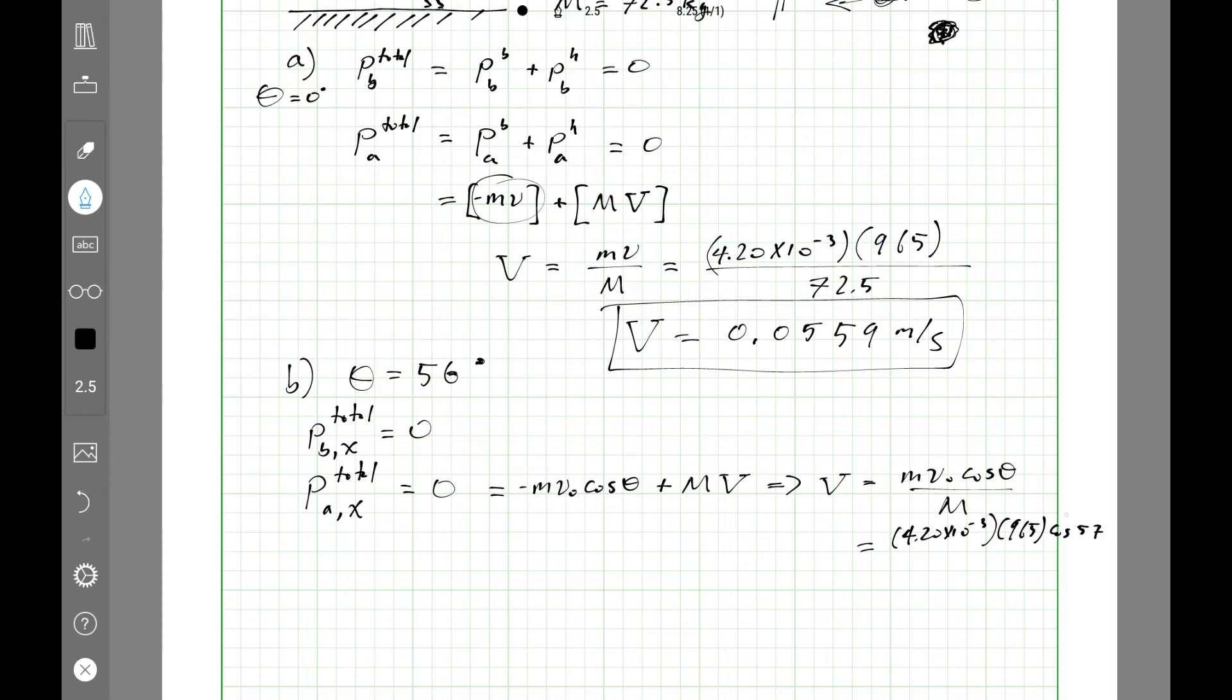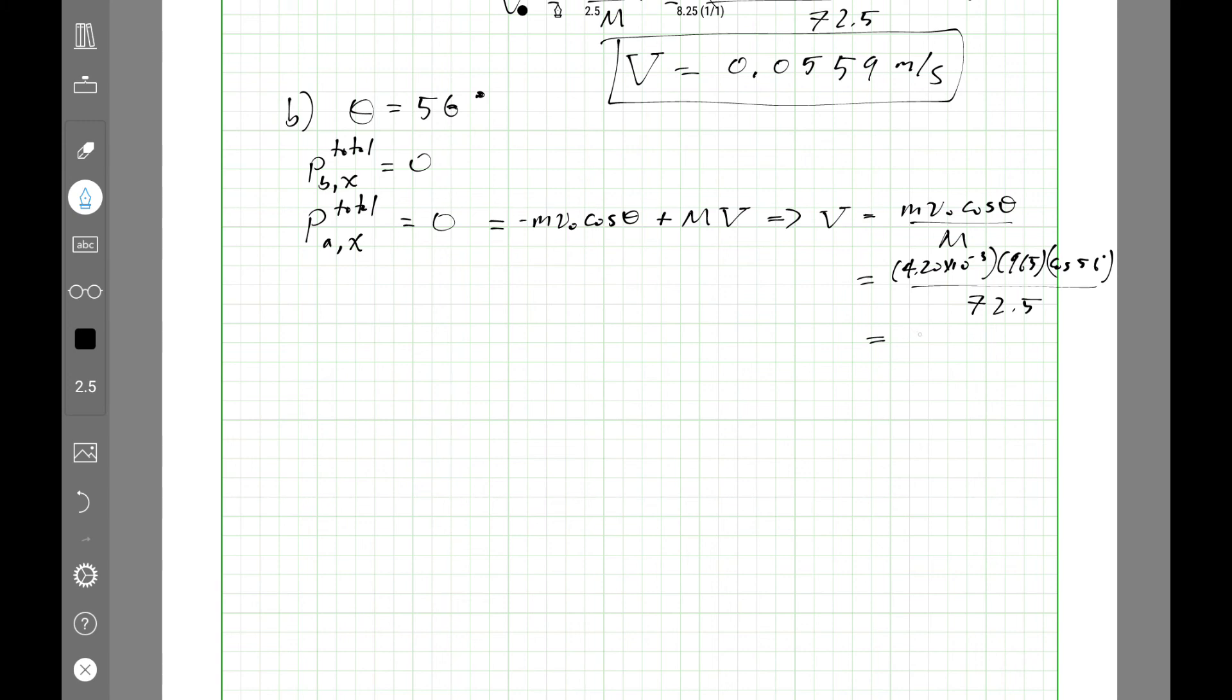56, 965 times 4.2 times 10 to the negative 3 times cosine 56 divided by 72.5. I get a recoil velocity of 0.0313 meters per second. So yeah, slower than when we had up here.